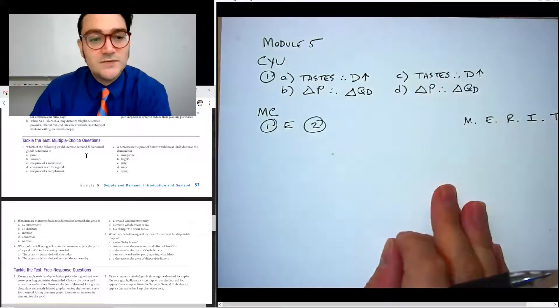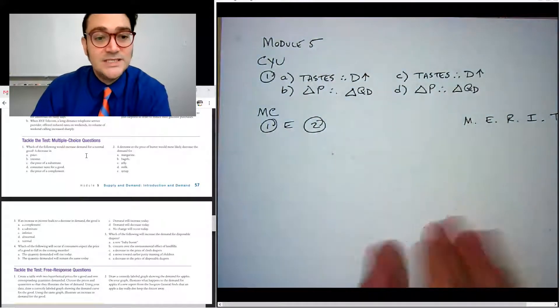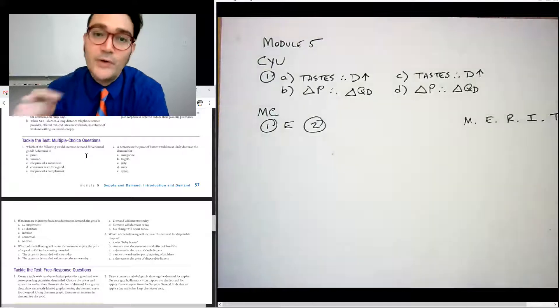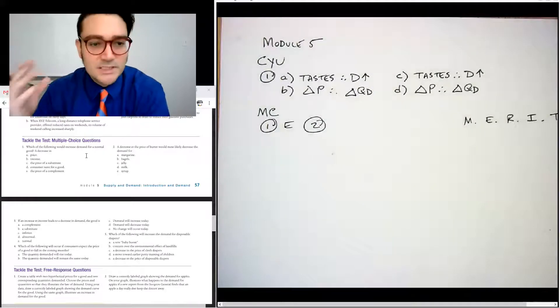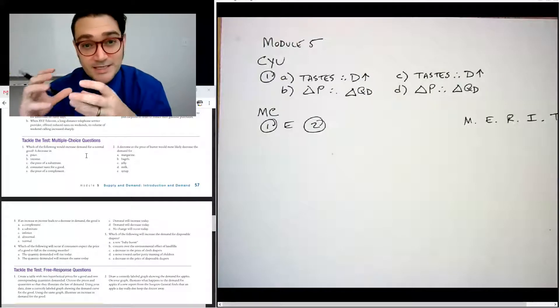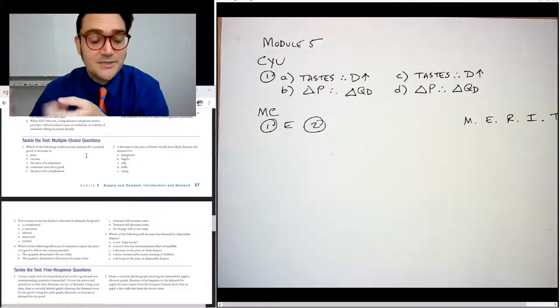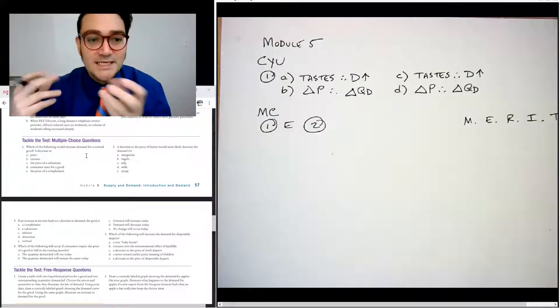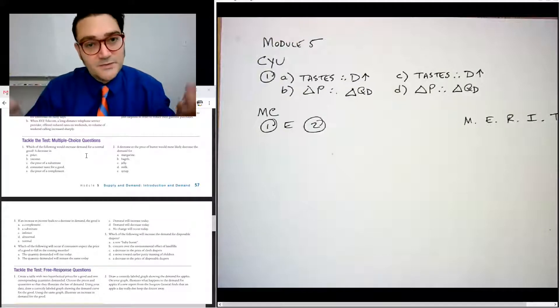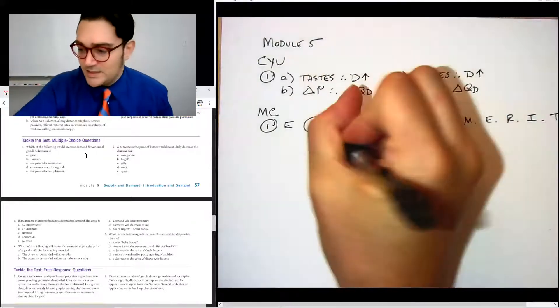Number two says a decrease in the price of butter would most likely decrease the demand for. And now this one's, I don't like it because it relies on you knowing information about complements and substitutes. So margarine, and I've had students over the years who are like, what is margarine? It's the, I can't believe it's not butter. It's not really butter. It's a butter substitute. Margarine is a substitute for butter. So a decrease in the price of butter would decrease the demand for margarine. That's that one.